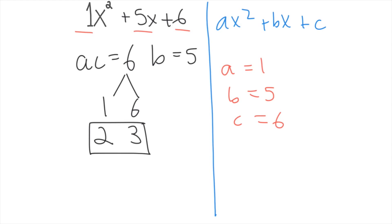Now since a is equal to 1 in this trinomial, the numbers 2 and 3 are actually the factors of the trinomial. You can now finish by filling in the factors directly to find that the factored form of this equation is x plus 2 times x plus 3.